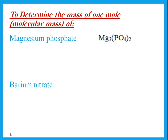Magnesium has mass number 24, and there are 3 magnesium atoms: 24 × 3. Phosphorus has mass number 31, and there are 2 phosphorus atoms: 31 × 2. Oxygen has mass number 16, and there are 2 × 4 = 8 oxygen atoms: 16 × 8. Adding them all up gives a molecular mass of 262.